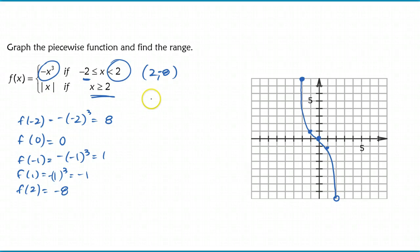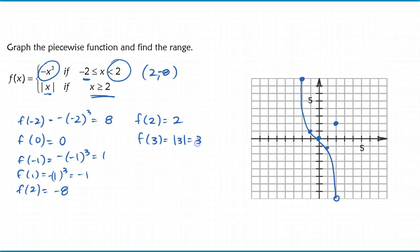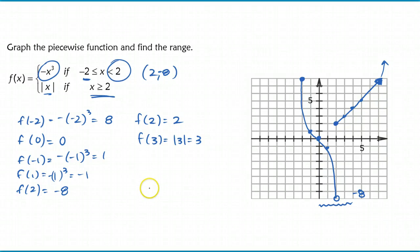For x greater than 2, f of x equals the absolute value of x. The absolute value of 2 is 2, so I come up to (2, 2) and create a closed circle because it is defined on that piece. Plugging in f(3), the absolute value of 3 is just 3, so I get the right-hand portion of my absolute value V-shape. For the range of this function, my low point is at negative 8 with an open bracket, and since the graph continues to positive infinity my high point is infinity - so the range is (negative 8, positive infinity).